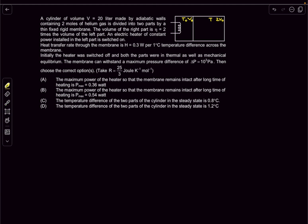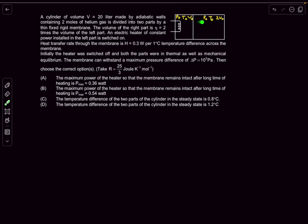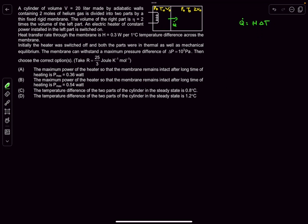Initially the heater was switched off and both parts were in thermal and mechanical equilibrium, so the initial temperature is T₀ and initial pressure is the same on both sides. When the heater is turned on, the temperature and pressure on the left chamber increase, causing heat transfer into the right section. We can write the heat transfer rate as Q̇ = H·ΔT, where ΔT is the temperature difference between left and right.